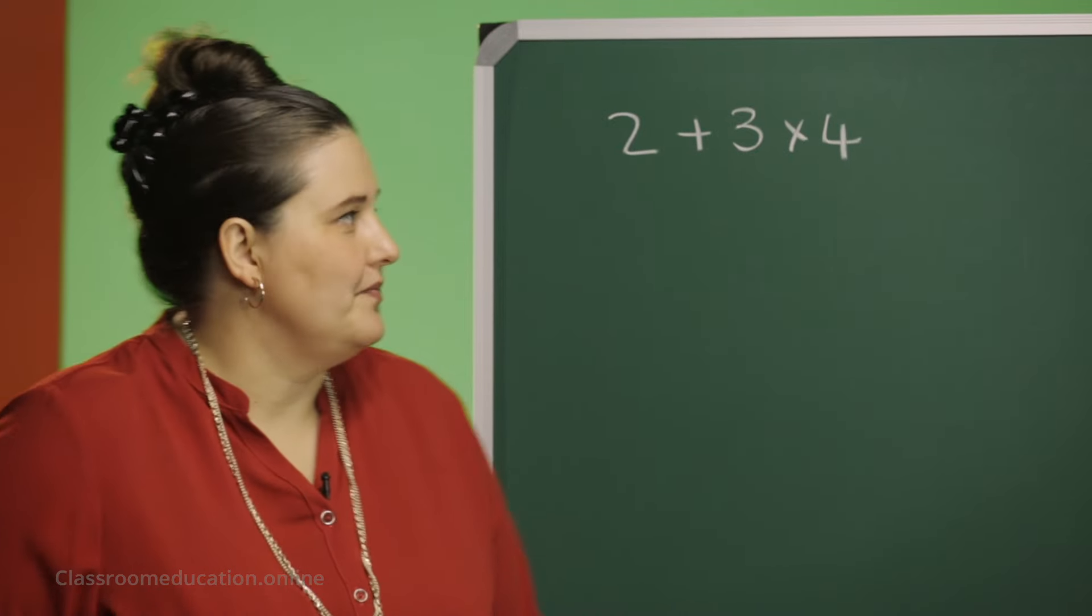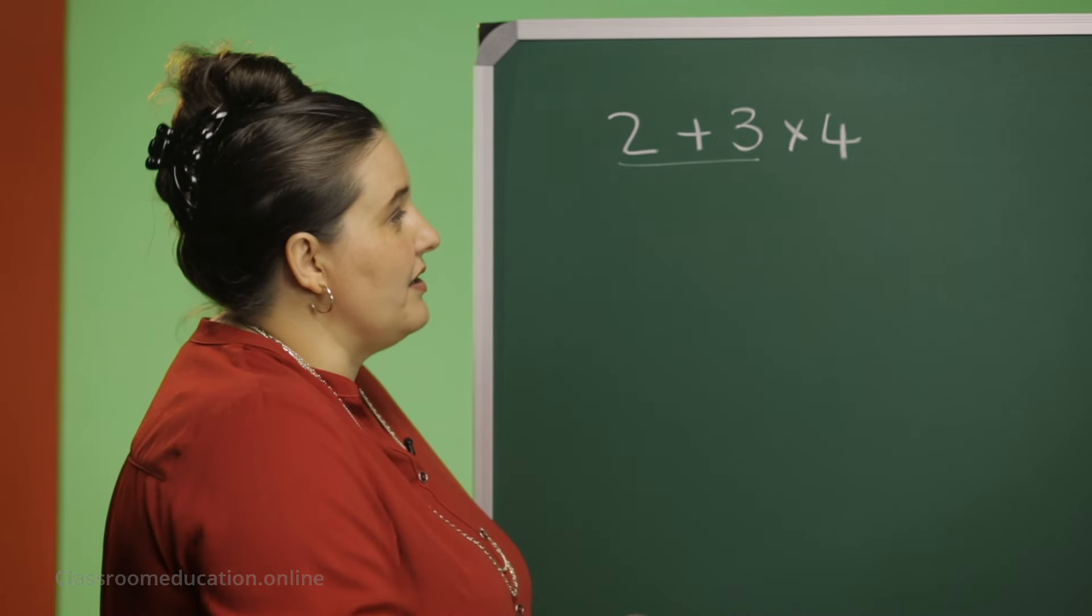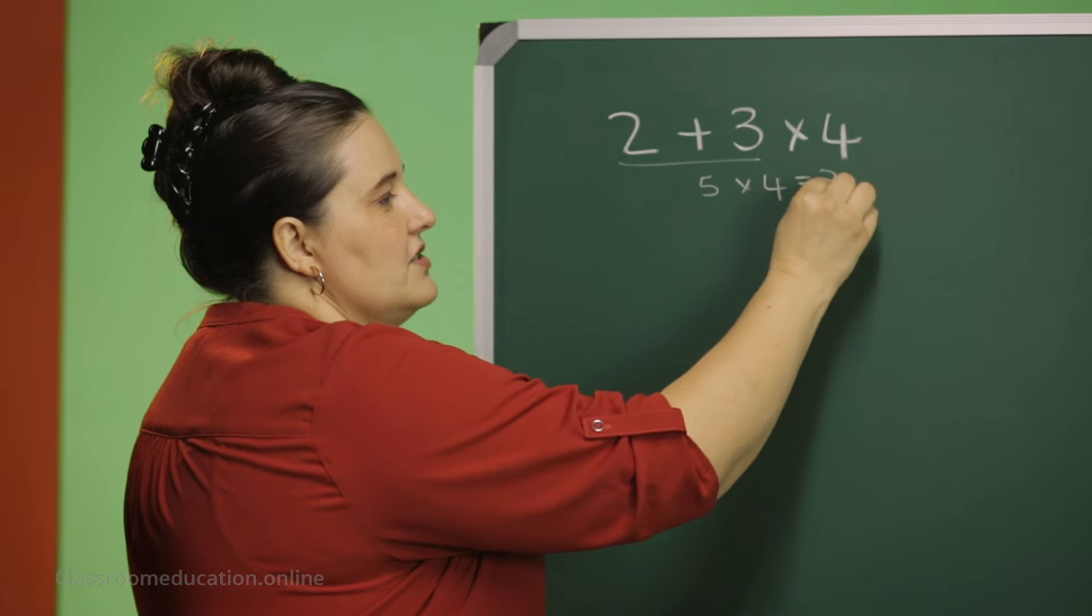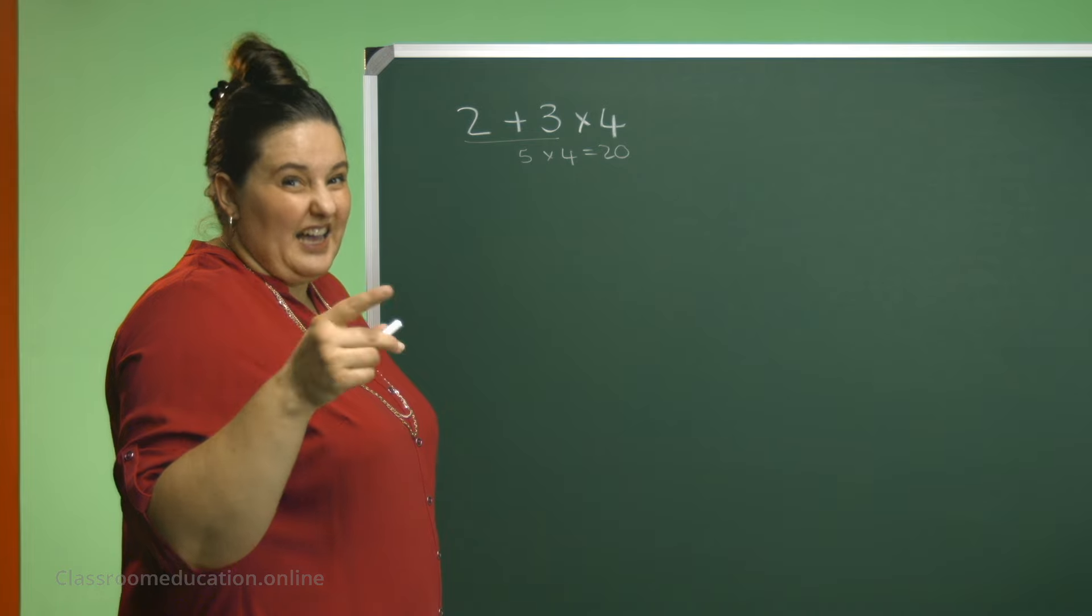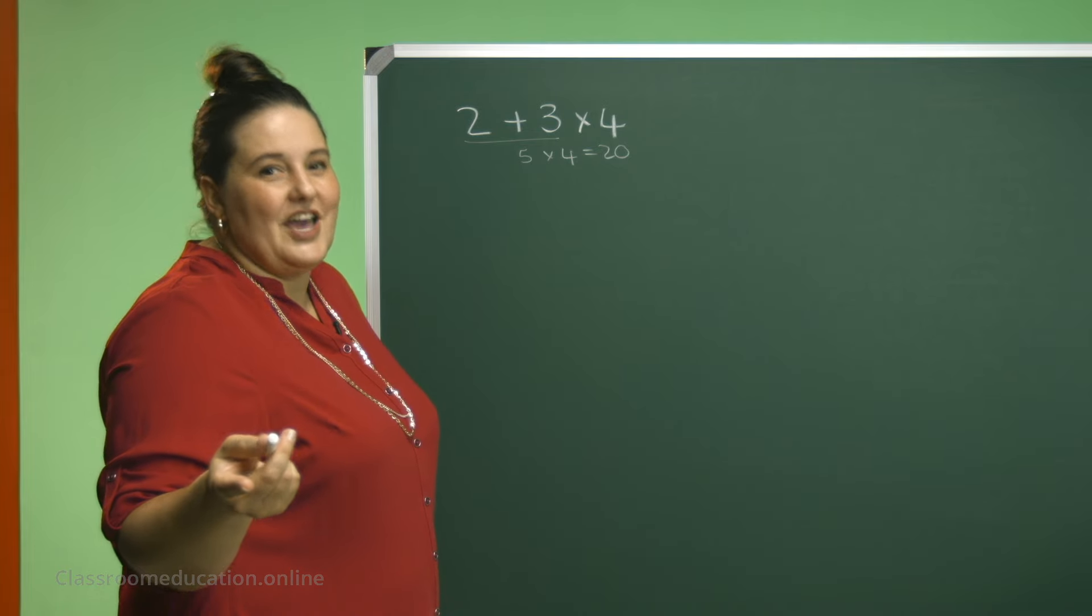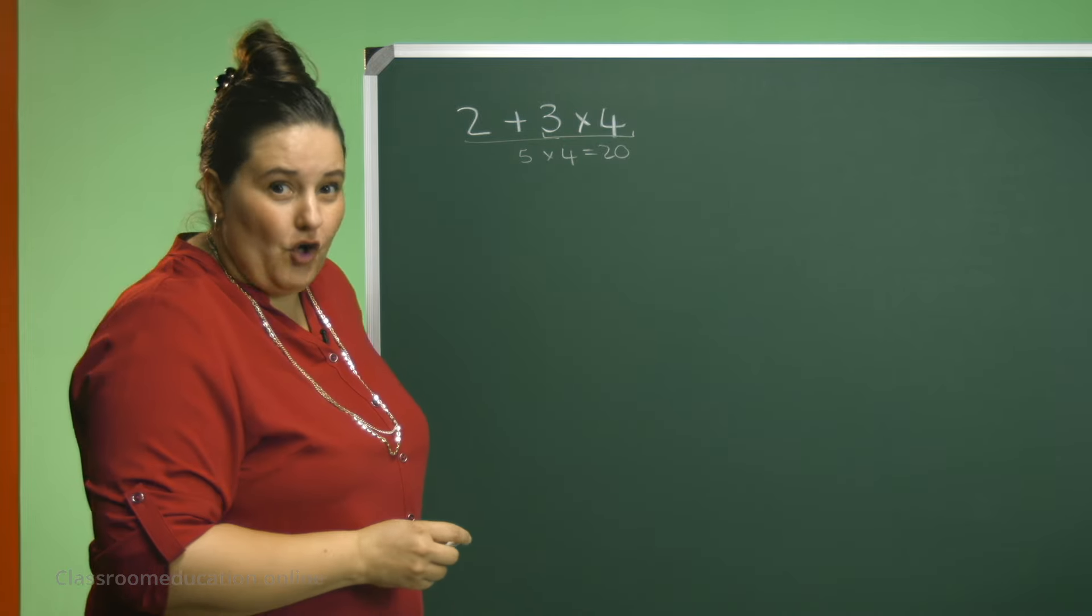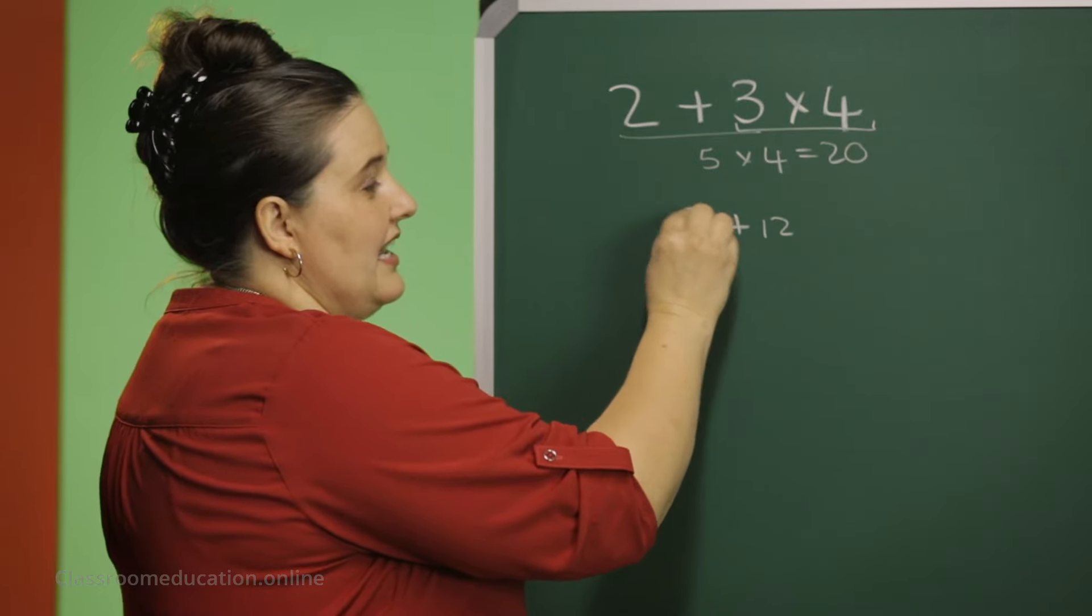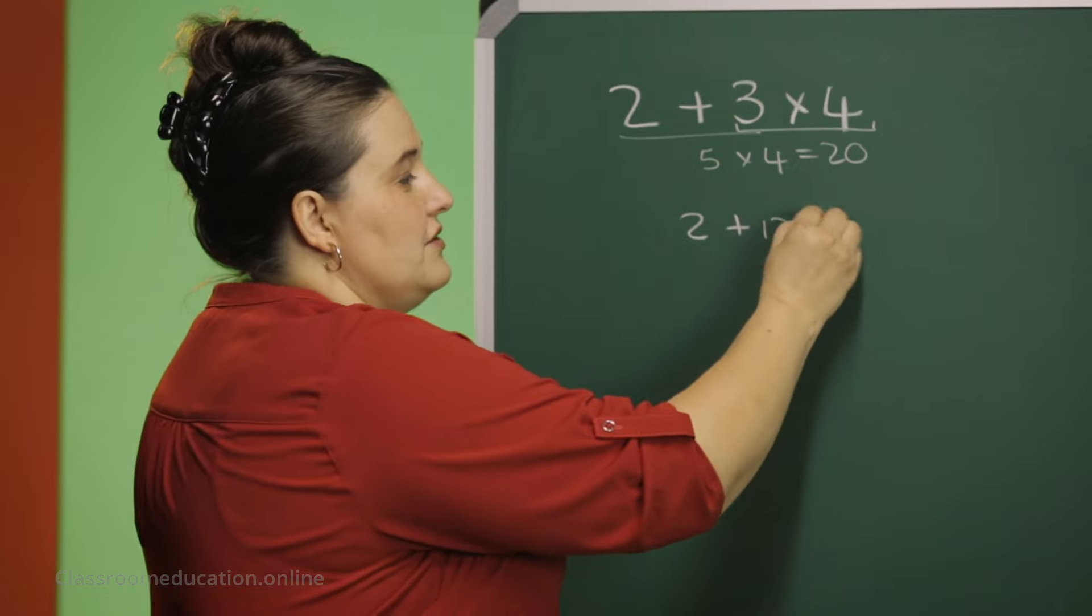Let's have a look. If you said 2 plus 3, that will be 5, and 5 times 4 is 20. Okay, but I got 14. So how did I get that? I said 3 times 4 first, and that was 12. And then I had to add the 2, and 2 plus 12 is 14.